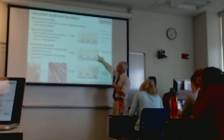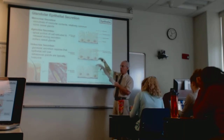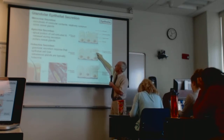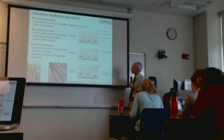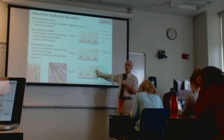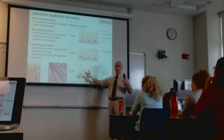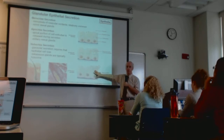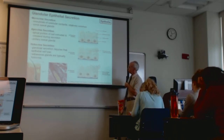Apocrine cells — such as those of the axillary region — secrete by blebbing off a portion of the cell; that apical portion becomes the secretory product. Holocrine cells are the most dramatic: the act of secretion requires cellular necrosis — the cell dies and yields all its contents to the surroundings.